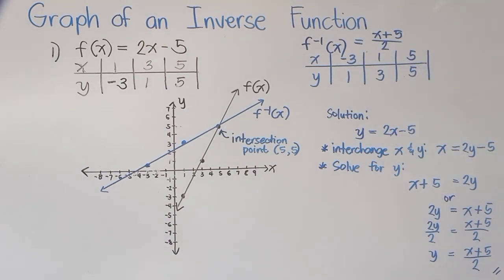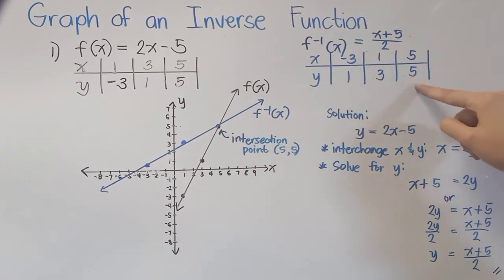You can actually verify if our equation is correct by substituting our x. Negative 3 plus 5 is positive 2, divide 2, it's 1. Then 1 plus 5 is 6, divide 2, it's 3. And 5 plus 5, 10, divide 2 is 5.